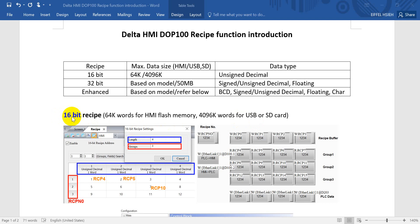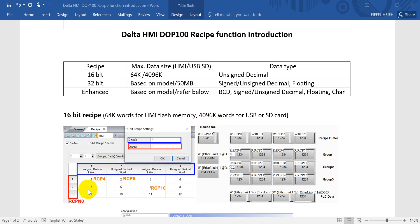Here you can see a 16-bit recipe. We can define the length — length means how many columns for the recipe, and group means how many rows. In today's example, we define three rows for columns. You can also see the recipe number. If we put 1, it will show recipes 1 to 4. And if we change this value to 2, you will see values 5 to 8.